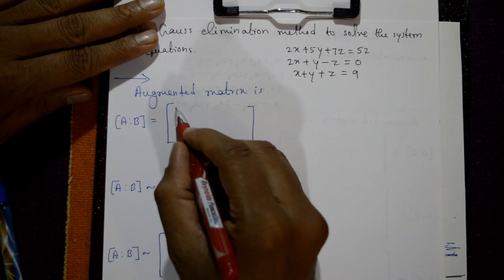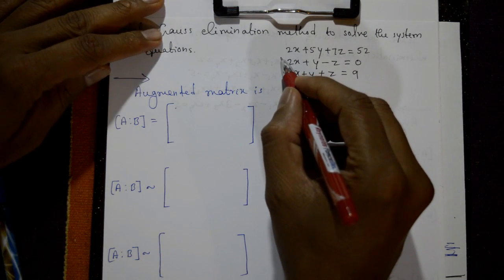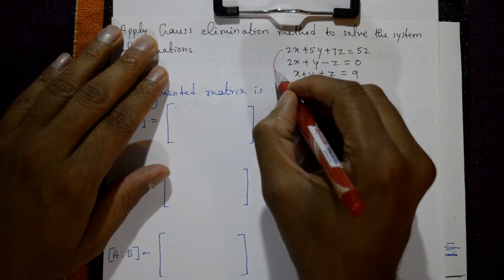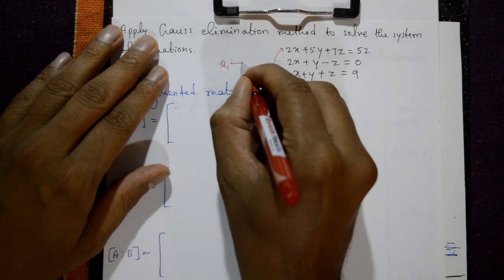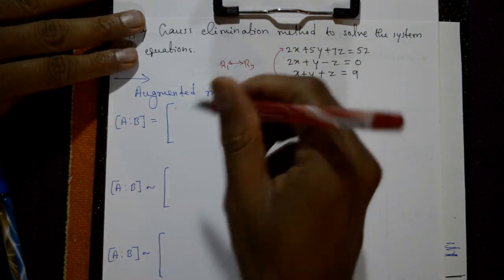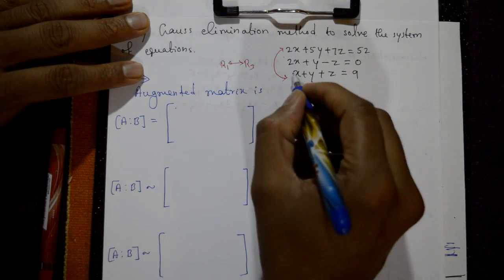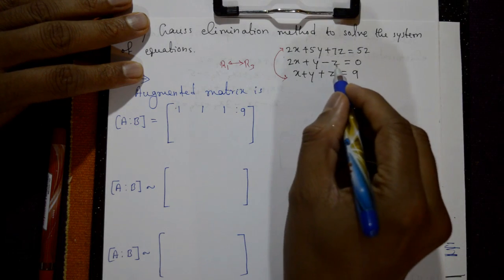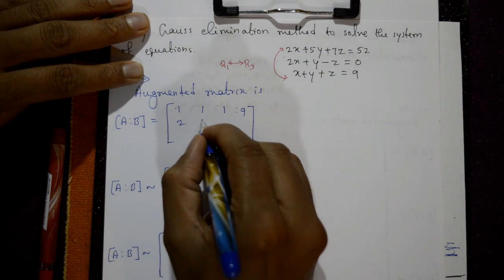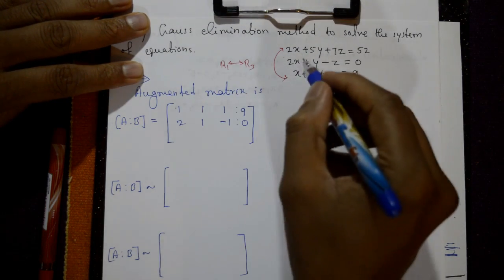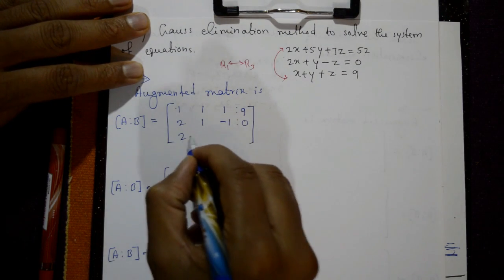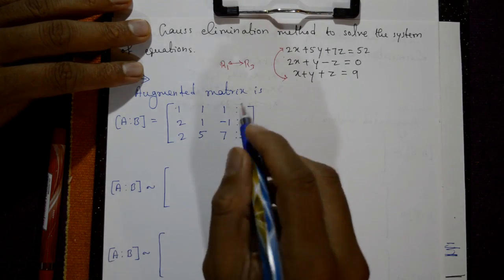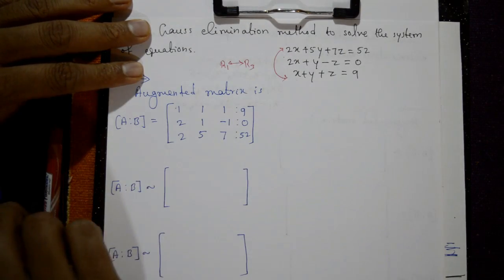We require a leading number of 1, so we interchange R1 and R3. Now the augmented matrix has first row: 1 1 1 | 9 (coefficients of x, y, z), second row: 2 1 -1 | 0, and third row: 2 5 7 | 52. This is the augmented matrix. We need to make it an upper triangular matrix.